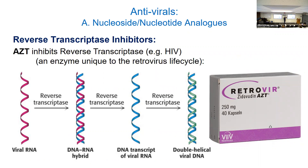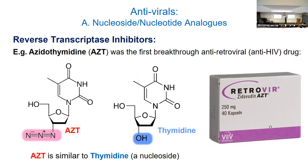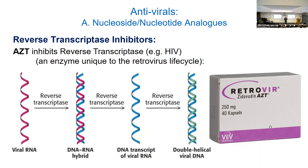These nucleoside analogs are sometimes also called reverse transcriptase inhibitors when talking about HIV, because HIV's polymerase is called reverse transcriptase. If you remember from earlier, reverse transcriptase takes the viral RNA and eventually makes double-stranded DNA from it. It's a polymerase — it's adding nucleotides — and this is the target for these drugs. Sometimes those terms are used interchangeably, but it's usually more specific when talking about HIV. The broader category is just nucleotide or nucleoside analogs.